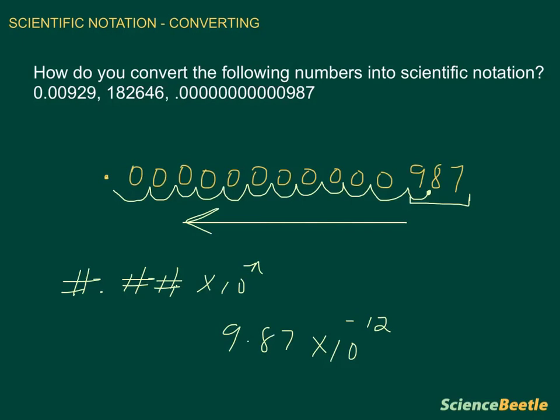Positive exponents in scientific notation tell you that you have a very large number greater than zero. In the next video, I'm going to show you a couple more examples, and hopefully that'll be enough to get you to the level where you understand scientific notation conversion.